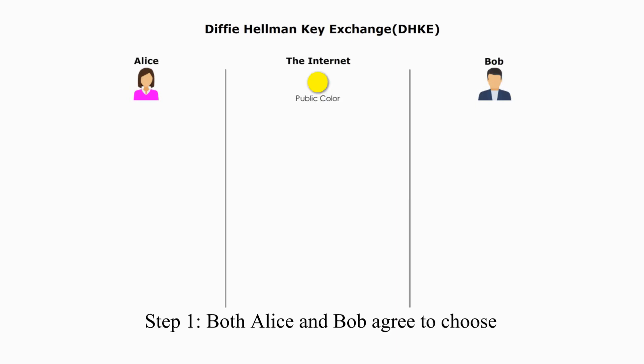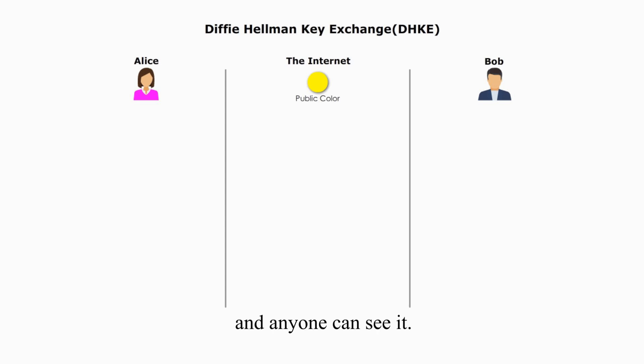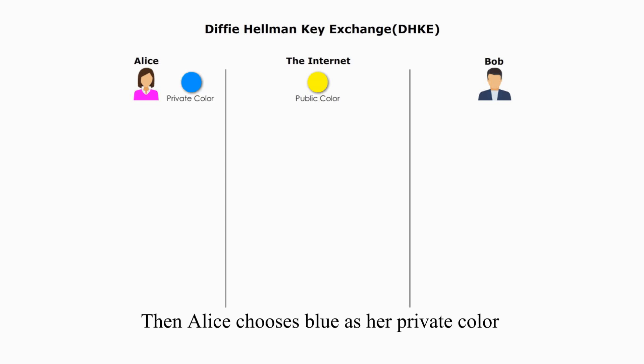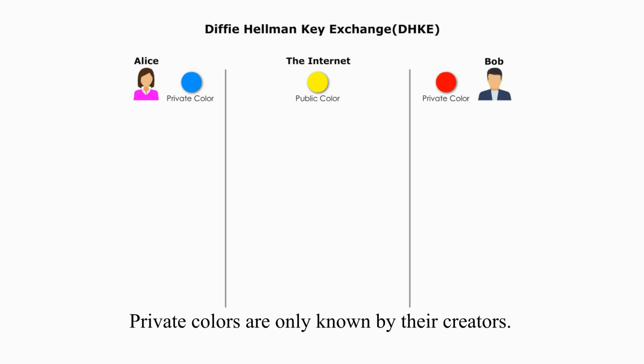Step 1. Both Alice and Bob agree to choose a publicly accepted color — yellow. It is a public common color they both agree to use. The color yellow is in the public domain, and anyone can see it. Then Alice chooses blue as her private color, and Bob chooses his private color, red. Private colors are only known by their creators.